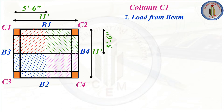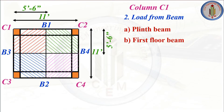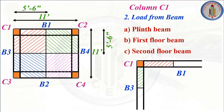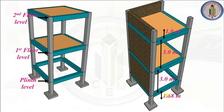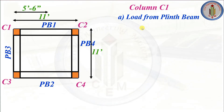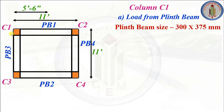Next, let's calculate the load from the beam. We have a plinth beam, first floor beam, and second floor beam. For column C1, two beams are connected: half the load from B1 and half the load from B3 will come to C1. The floor height below plinth level is 1.68 m, floor height is 3 m, and we have a parapet wall of 1 m height. For the plinth beam, column C1 receives loads from PB1 and PB3 — not the full load, but half of each.